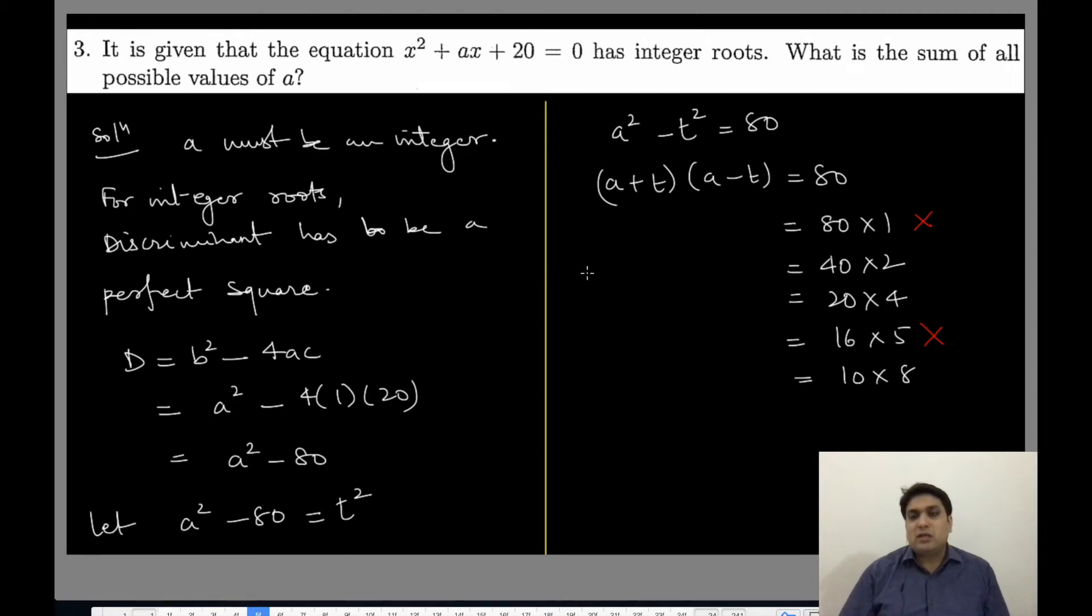Why? Because if a + t is 80 and a - t is 1, if I add them, 2a equals 81, so a will be 81/2, which is not an integer. We won't take these values.